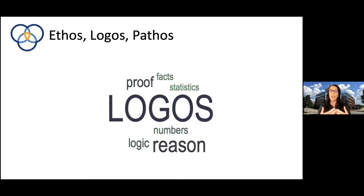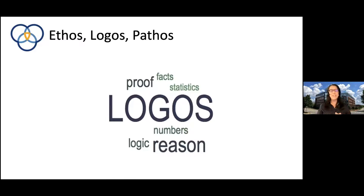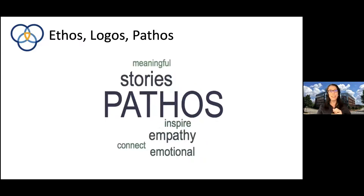Logos is where we get the word 'logic' from. These are facts, proof, statistics, numbers, reason, and logic. This is where most data analysts and data scientists feel the most comfortable — this is their zone. This is where they want to put up a p-value and just leave it there. And this can be very problematic. That's why we want to combine ethos and logos with the third one — pathos.